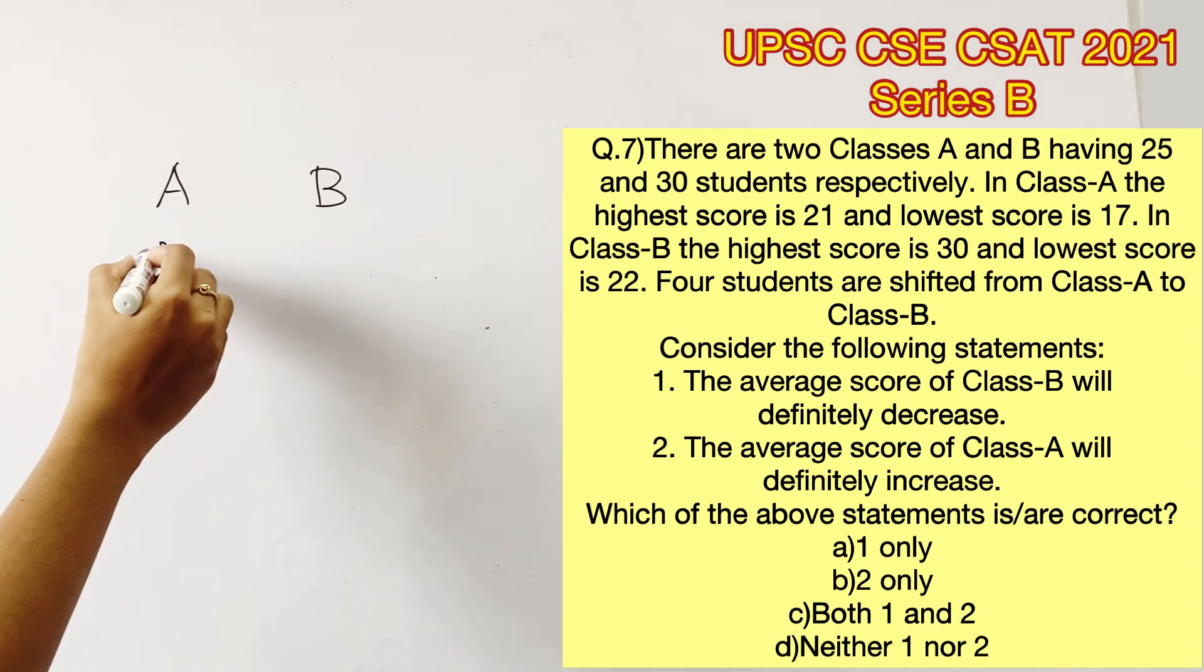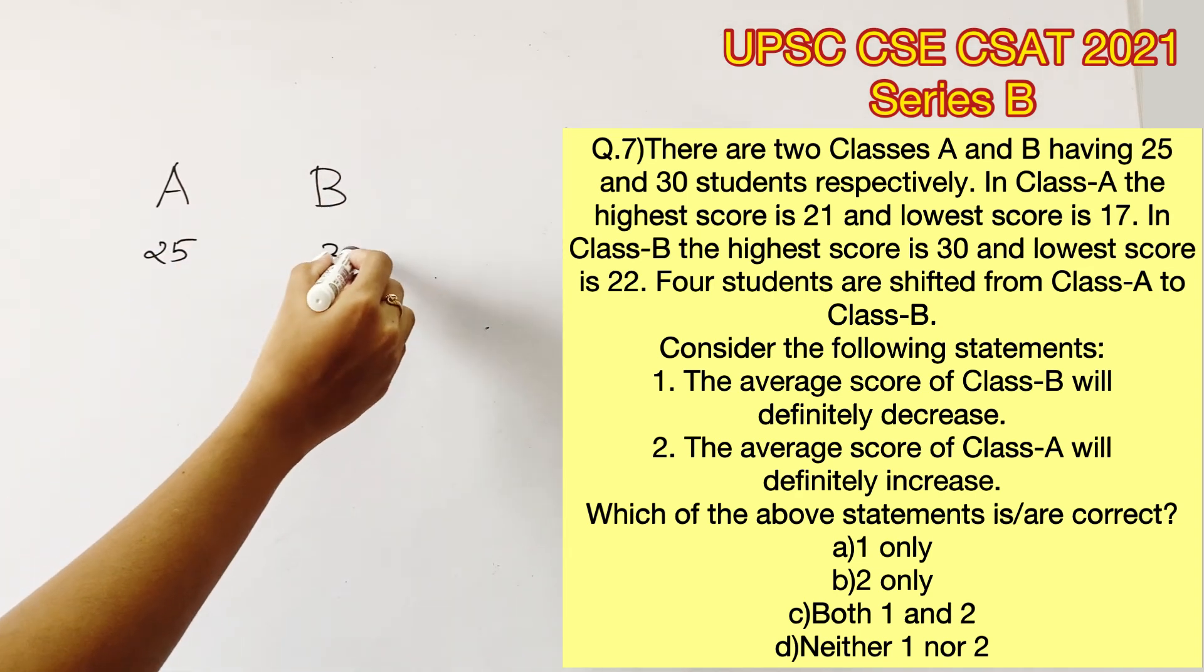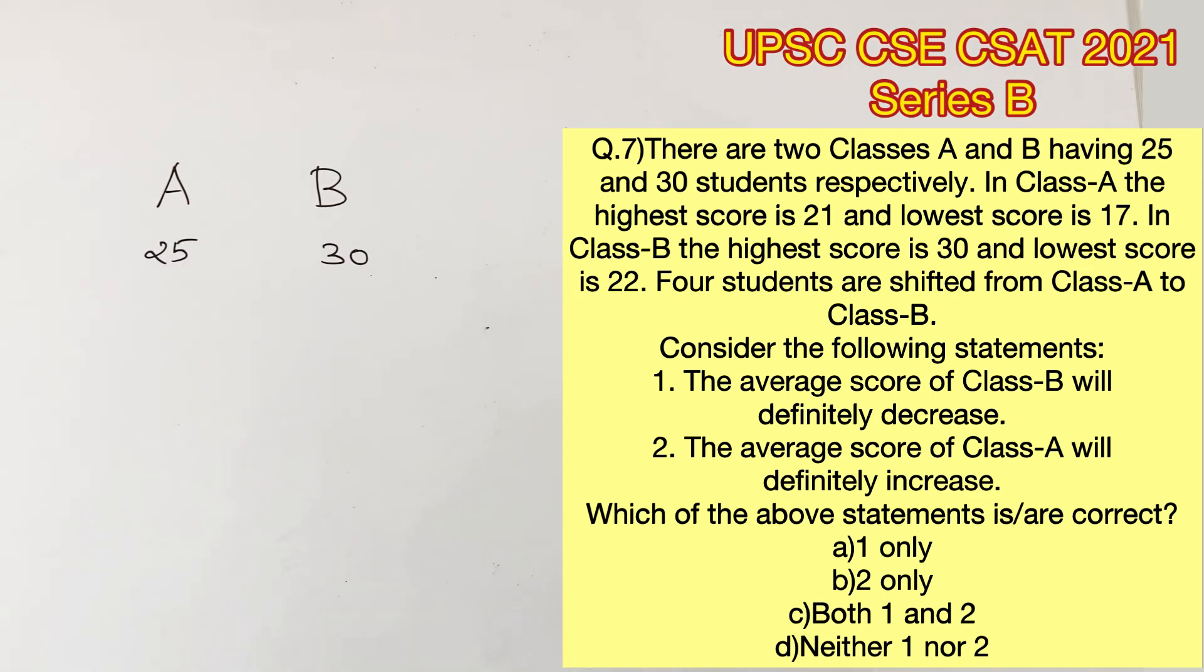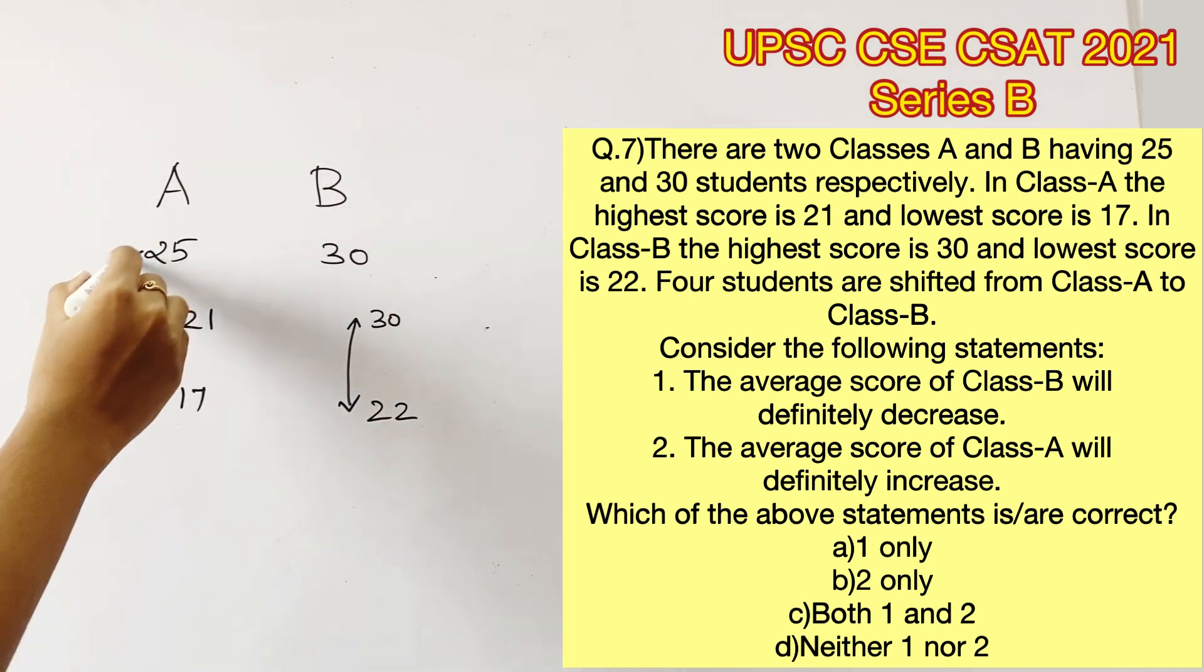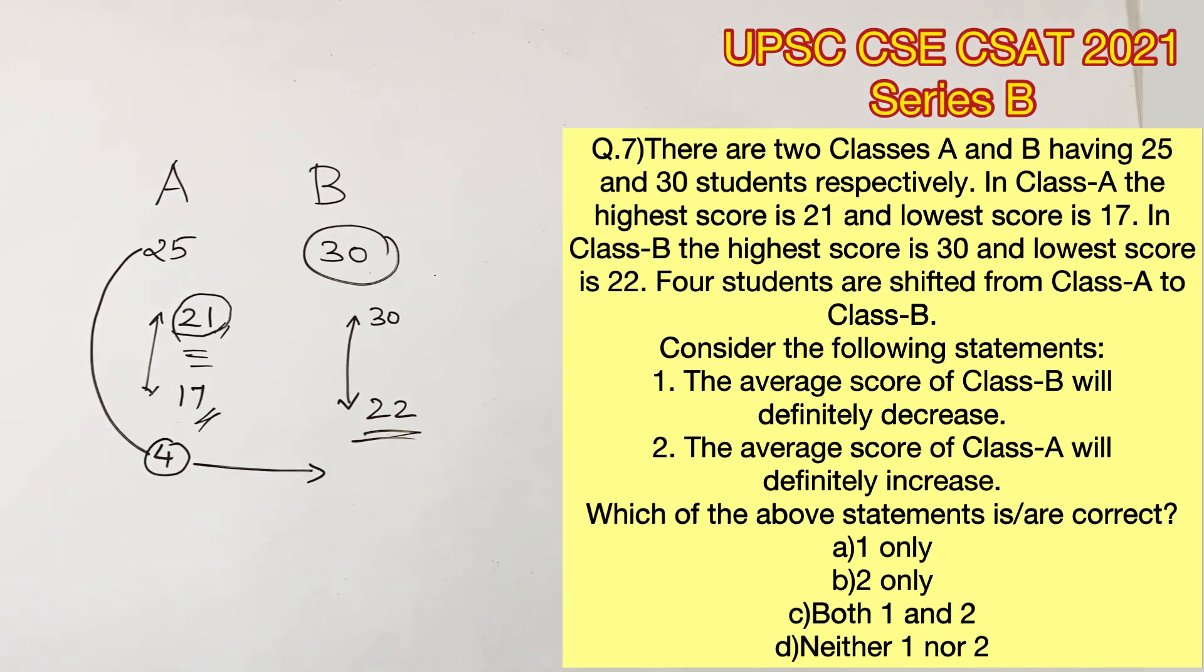There are two classes A and B having 25 and 30 students respectively. In class A, the highest score is 21 and the lowest is 17. In class B, the highest is 30 and the lowest is 22. Four students are shifted from class A to B.